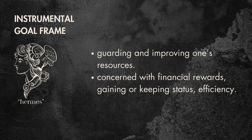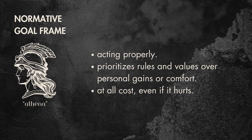The instrumental goal frame focuses on guarding and improving one's resources. It is concerned with financial rewards, gaining or guarding status, performance gains, and efficiency. It can be as simple as choosing to cook at home to save money after a long day, or as complex as weakening a labor union through internal conflict so your company keeps more profits. The normative goal frame focuses on acting properly — it is obsessed with doing the right thing and being accepted socially. When this frame wins, we prioritize rules and values of society over the other goal frames, even at the cost of self-interest.